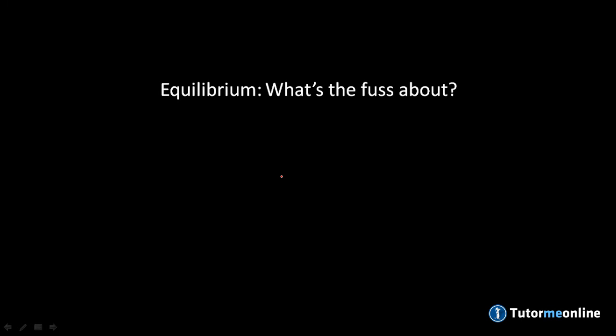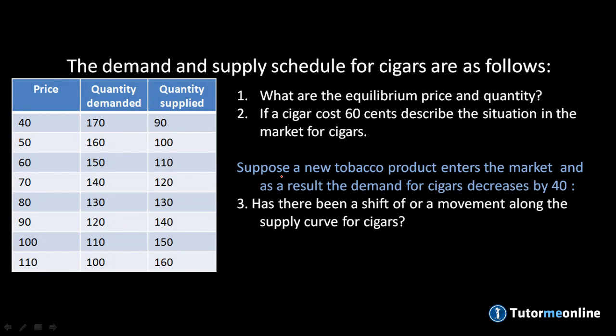Welcome to this tutorial video from TutorMeOnline.ca.za. This is a tutorial for first year microeconomic students and we're going to be looking at equilibrium — exactly what the fuss is about. We're going to deal with it by means of a question, looking at the demand and supply schedule for cigars, and we'll consider a few events that occur.